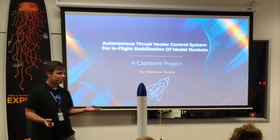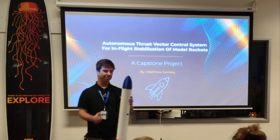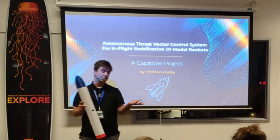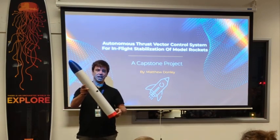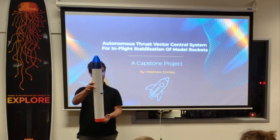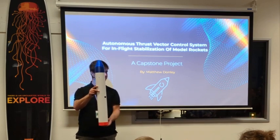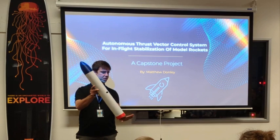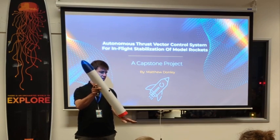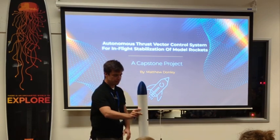A thrust vector control system is a way to stabilize a rocket in flight or in descent. It has a set point for the rocket, which is typically pointy end up and pointy end down, and if it deviates from that, it adjusts the way the thrust is pushed to get it back to its set point.